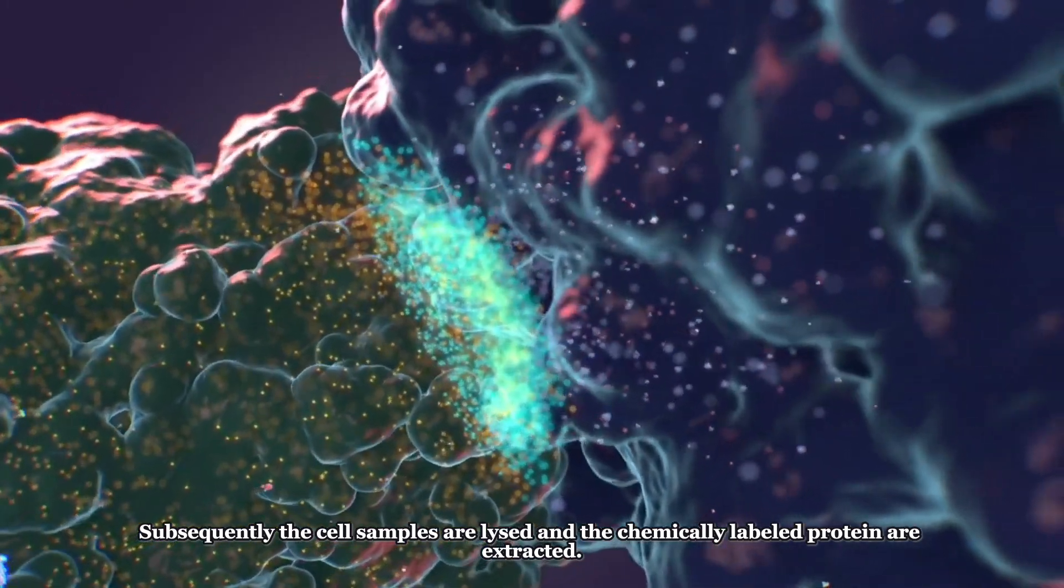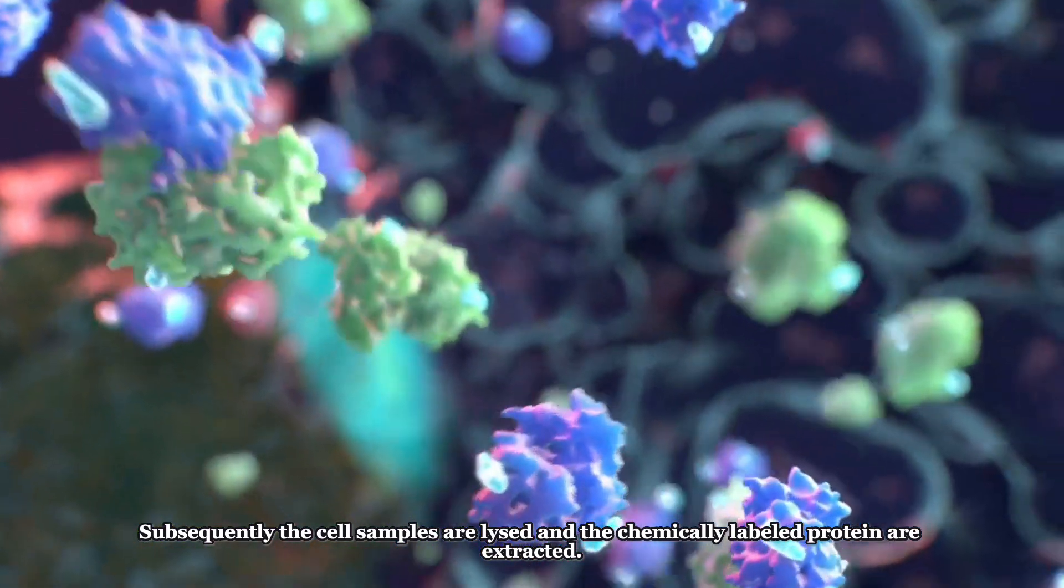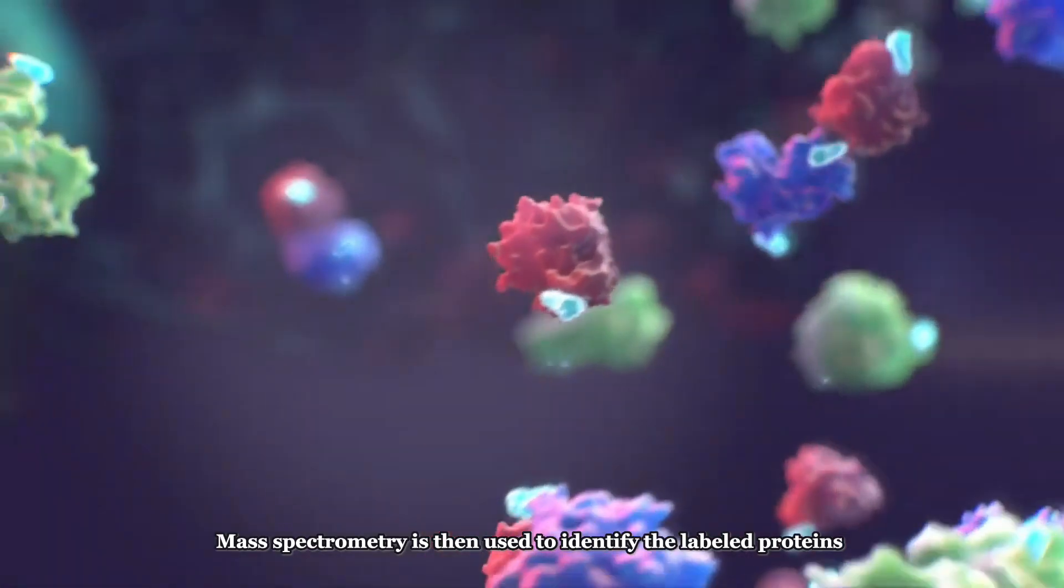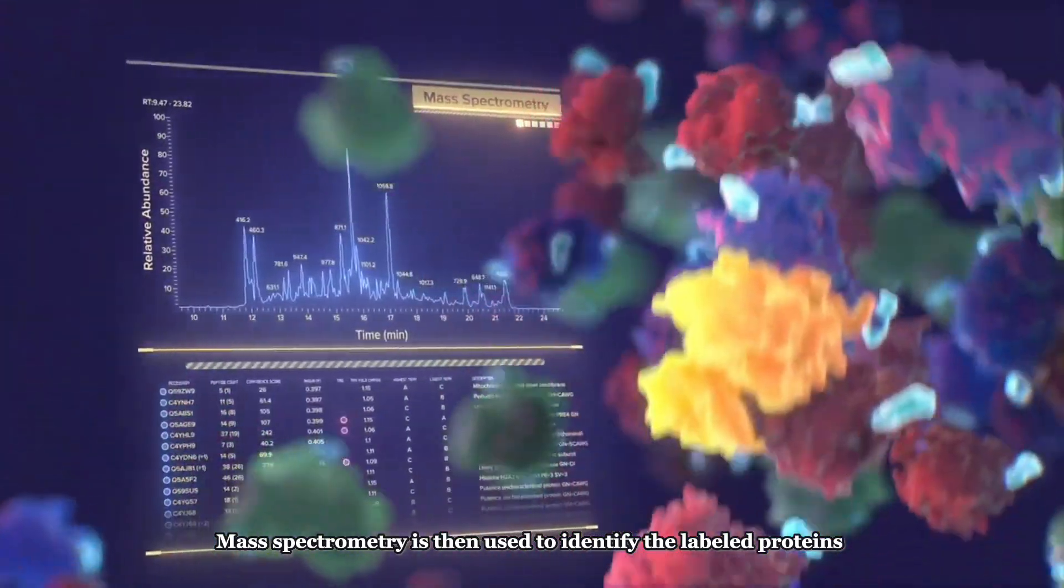Subsequently, the cell samples are lysed and the chemically labeled proteins are extracted. Mass spectrometry is then used to identify the labeled proteins.